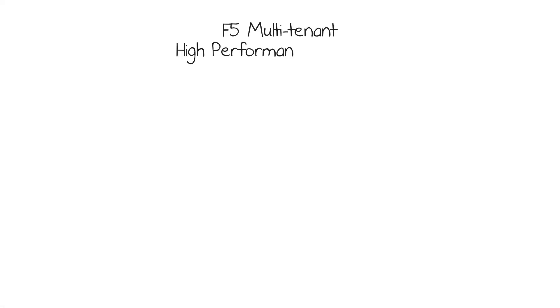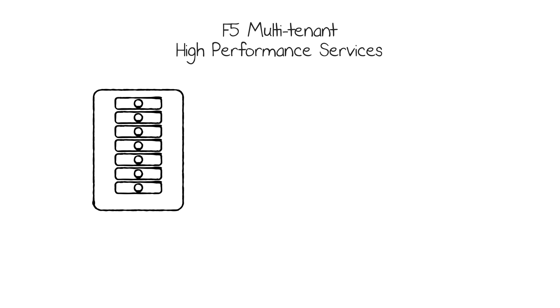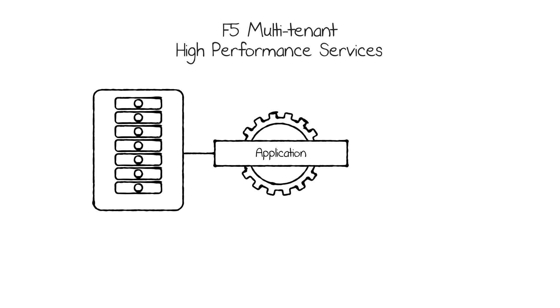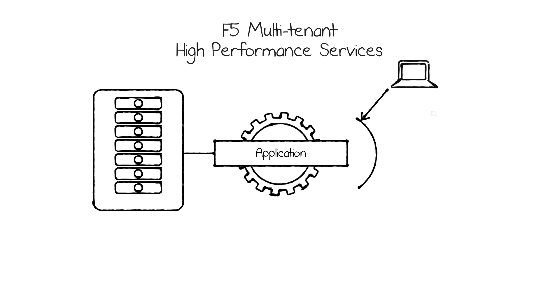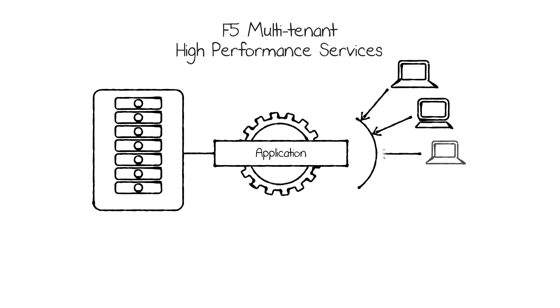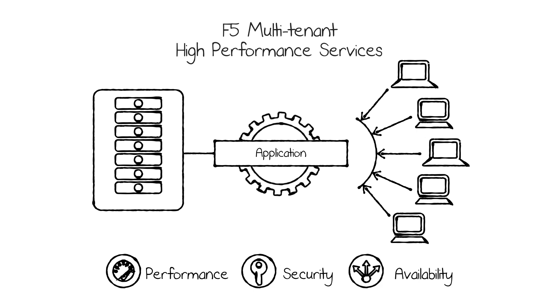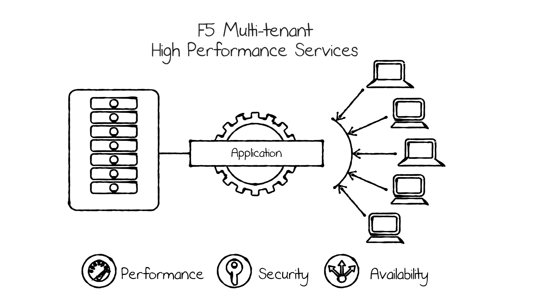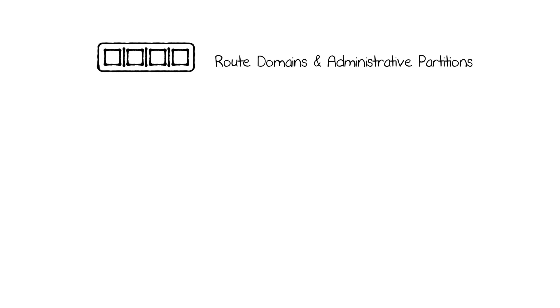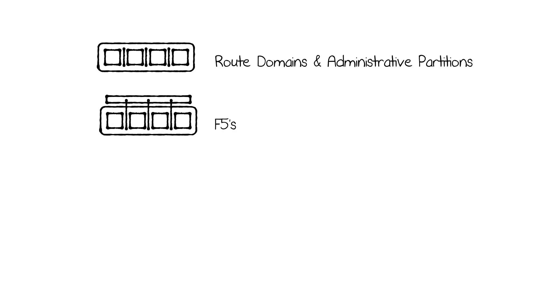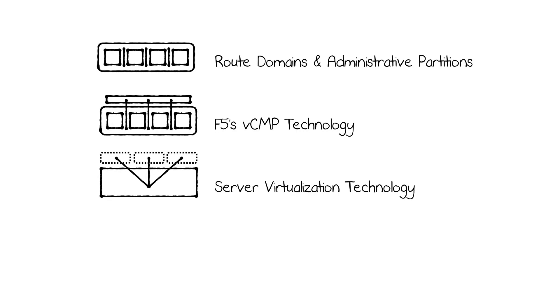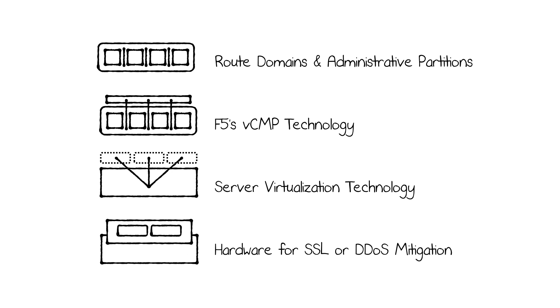Welcome to the F5 multi-tenant High Performance Services Fabric Whiteboard. Today we're going to talk about how to deliver application services from a shared infrastructure so that the applications and users get the levels of performance, security, and availability they expect, but you get the level of utilization you require. We think there are about four ways to do this, so let's run through them one by one and then look at how you decide which one is right for you.